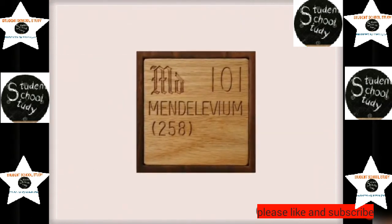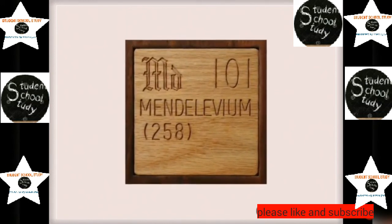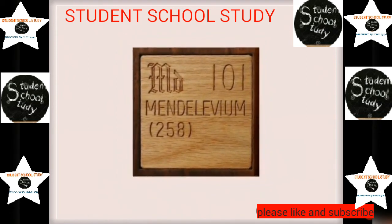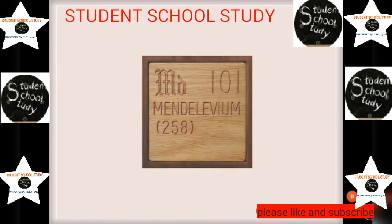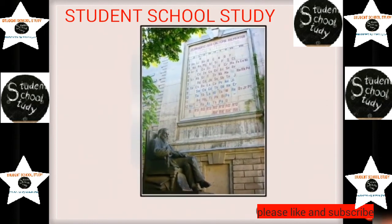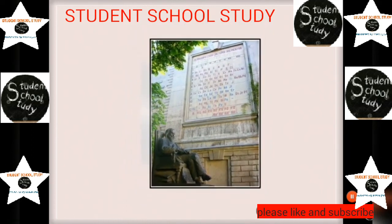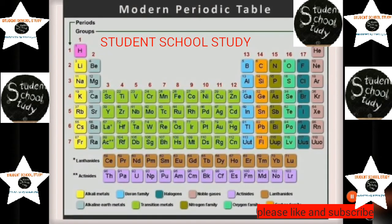Despite these problems, Mendeleev's contributions made the task of understanding the properties of elements very easy. To honor his work, the element with atomic number 101 is named Mendelevium. Scientists acknowledged his work by installing his statue and his periodic table on a giant wall in St. Petersburg. Since properties like atomic number were not understood at that time, some mistakes remained in Mendeleev's periodic table, which were corrected in the modern periodic table. Although the modern periodic table looks different, it still has periods and groups as Mendeleev proposed.